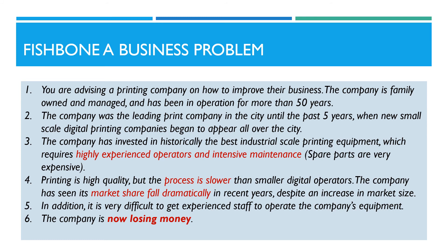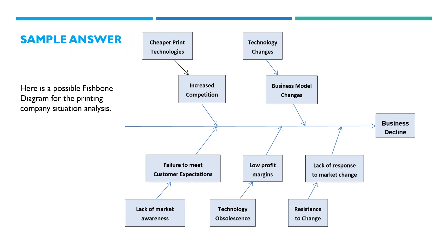Let's look at how we could analyze the causes of this problem using a fishbone analysis. We have identified five major causes of the company's declining business. The first cause is the availability of cheaper print technologies, which has resulted in increased competition. These changes in technology have led to changes in the business model for printing businesses. The owners of the company also seem to have had limited market awareness and are failing to meet customer expectations. The expensive technologies used by the company are becoming obsolete, leading to much lower profit margins. Finally, the owners of the company have been resistant to change and as a result have not responded to market conditions.